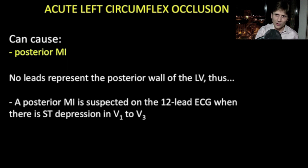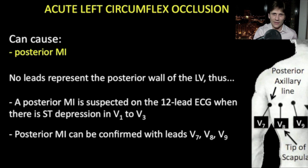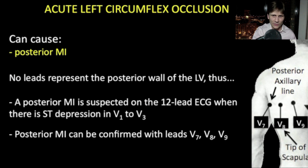It's very important to know that an occlusion of the left circumflex artery can cause posterior MI. And perhaps even more important: no leads on the EKG represent the posterior wall of the left ventricle. Thus, a posterior MI is suspected on the 12-lead when there's ST depression in V1 to V3. To be certain, a posterior MI can be confirmed with leads V7, V8, V9. V7 is placed at the posterior axillary line, V8 at the tip of the scapula, and V9 near the spine. You can also just turn the EKG upside down, hold it up to the light — essentially the same as placing posterior leads — and take these people to the cath lab.